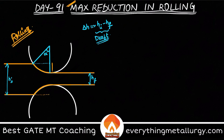You have some part on each side. If you add up these two lengths, you get delta h. In other words, this is delta h by 2 on each roll, because on both rolls you have equal reduction taking place.